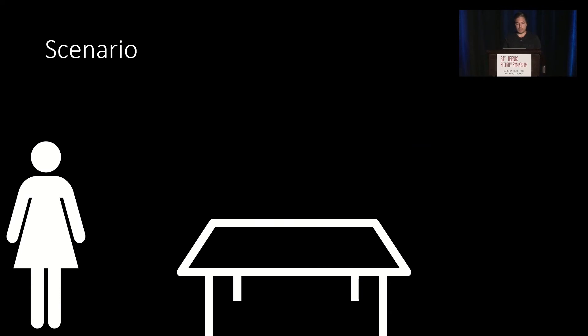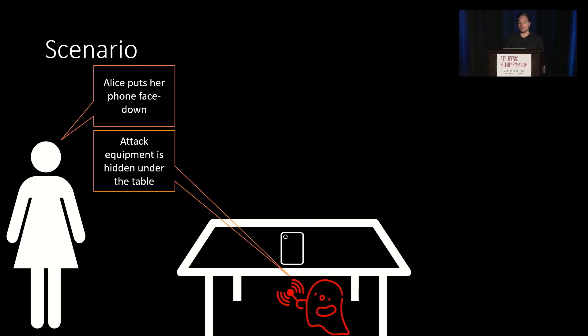So the scenario we evaluated is the following. For example, Alice is putting her phone face down on a table, and the attack equipment is hidden under the table, and the attacker is now able to inject touch points and control the device.